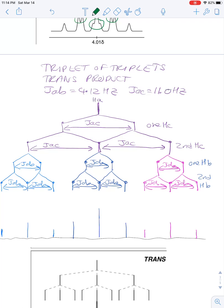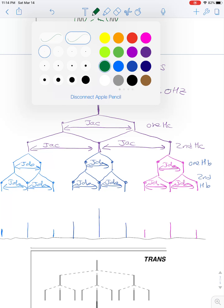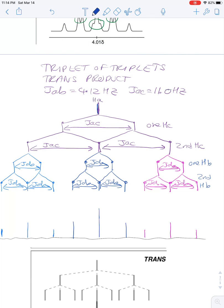The trans product is more complicated because the two couplings aren't the same. We're going to start with the middle of the signal being HA. It's generally advisable for sanity to start with the larger of the two coupling constants to get the elements spread out before you then do the smaller couplings.